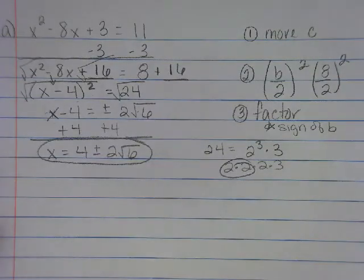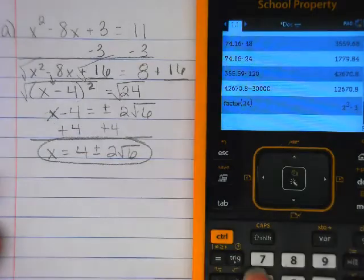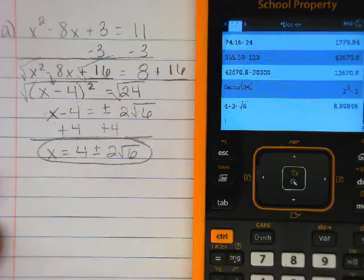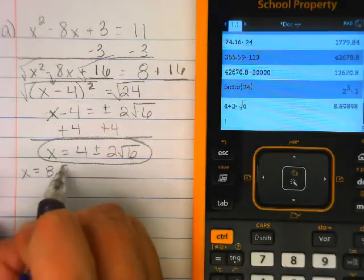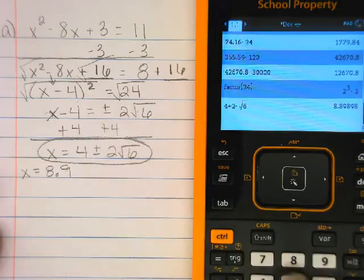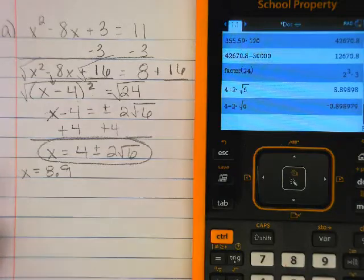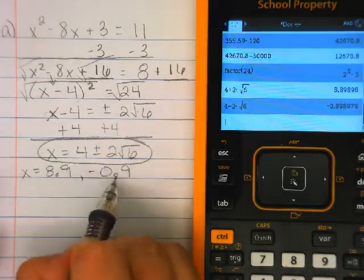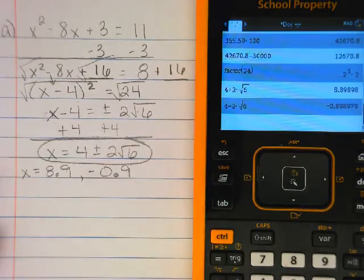Now, you could, if you wanted, you could go to your calculator and you can say four plus two times the square root of six. And you can make it a decimal if you wanted. We'll call it 8.9. You could do four minus two square root of six. And we get negative, we'll call it a negative 0.9. Those are your roots.